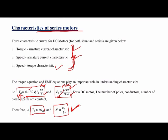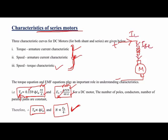One important thing to remember about the DC series motor: the field winding is connected in series with the armature. Because of this series connection, the line current IL, the series field current ISE, and the armature current IA are all equal.